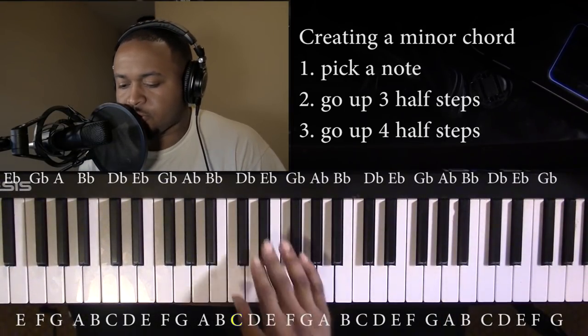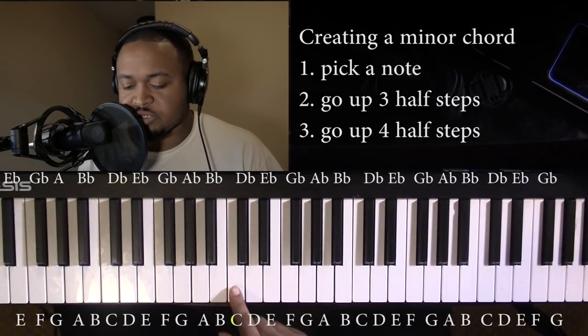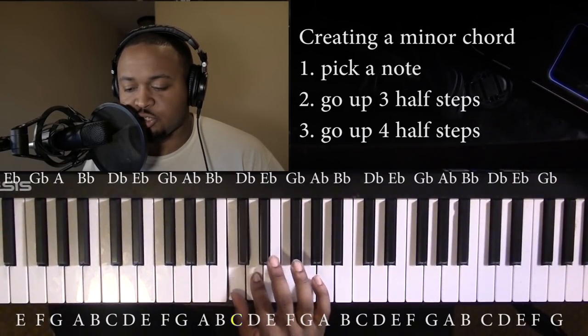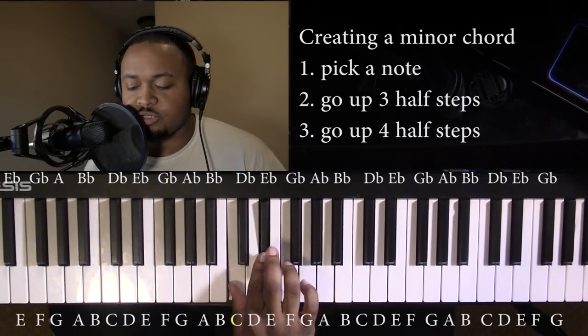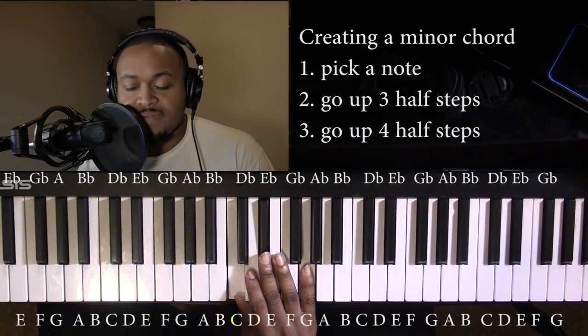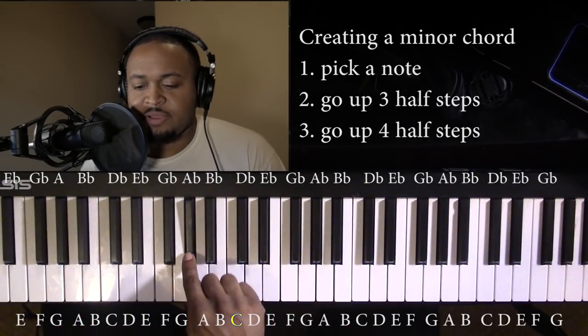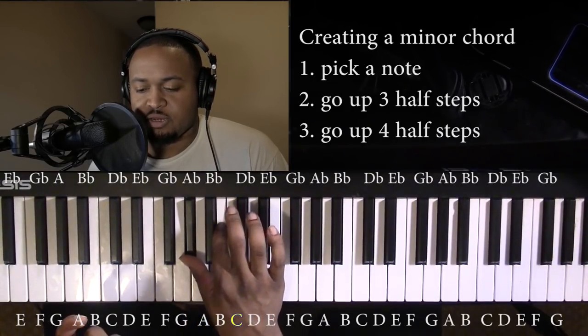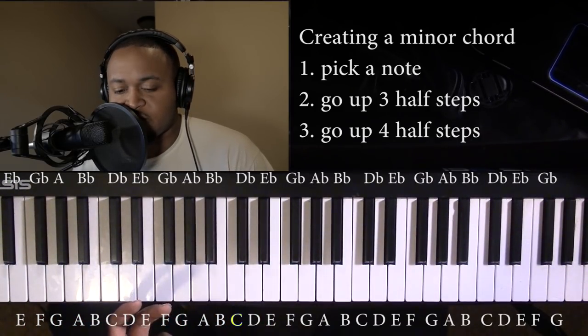So to use a minor chord, the way you build a minor chord, just pick any note, pick any note you want. So I'm just going to start with C, and then you go up three half steps. So it's literally the next one, two, three. Keep that note. And then you go up another four half steps. One, two, three, four. That's a C minor chord. And you can do that with any note. So A flat, go up three half steps. One, two, three. And then again, one, two, three, four. A flat minor. So it's very simple. You can start with minor chords. That'll help.